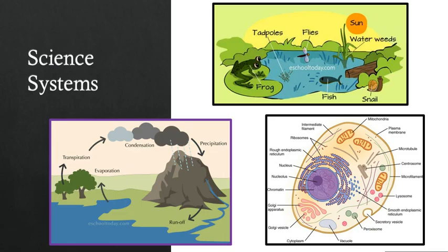An example of systems in science would include something like an ecosystem that you see here. All the plants, the water, the animals, the sun are all interacting with one another within that same ecosystem. Over here we have the water cycle, and that is definitely an example of a system. And then here another system where we have a cell and all the different parts of a cell working together.